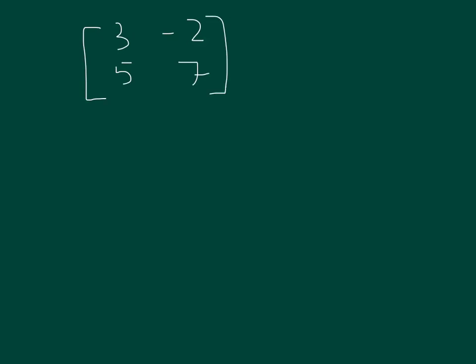To find the determinant of this matrix, we would first write the determinant symbol with 3, negative 2, 5, 7 inside.